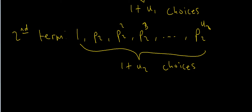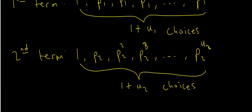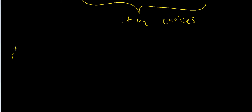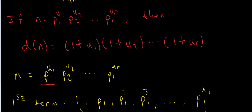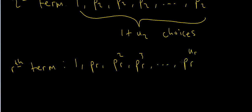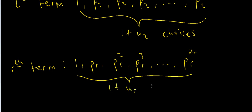The third term will similarly have 1+u3 choices. Continuing up to pr^ur, the rth term: the possible factors could be 1, p_r, p_r squared, p_r cubed, all the way up to pr^ur. Again, how many choices are there? There's 1 plus ur, so the total number of choices for the rth term is 1+ur.